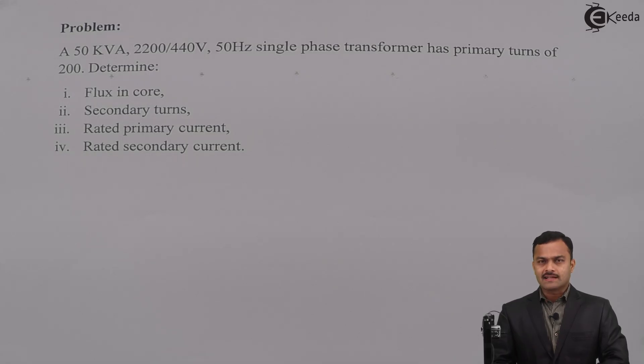The statement of problem is: a 50 kVA, 2200/440 volt, 50 Hertz single-phase transformer has primary turns of 200. Determine: first, flux in core; second, secondary turns; third, rated primary current; and fourth, rated secondary current.